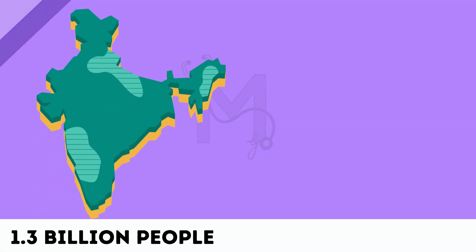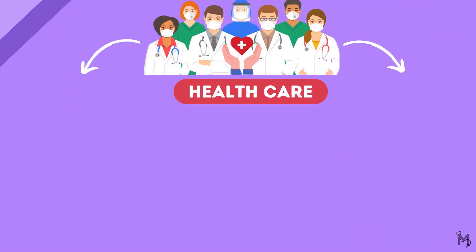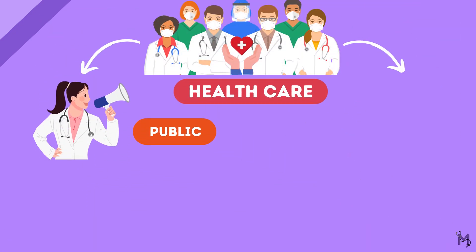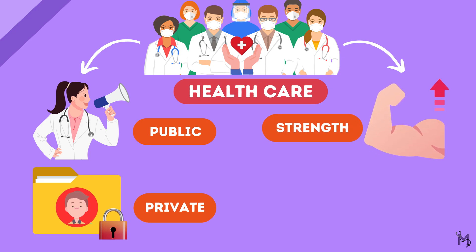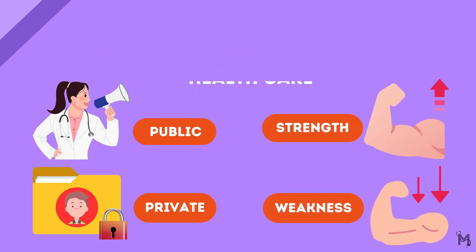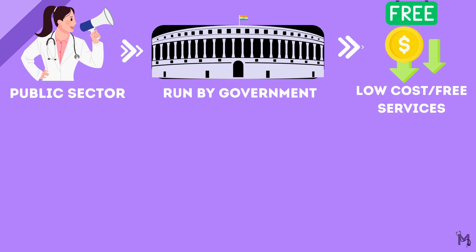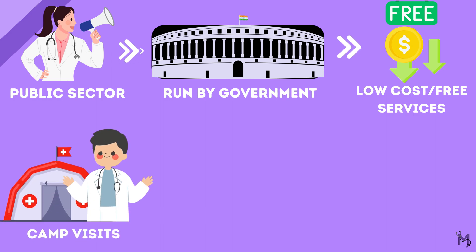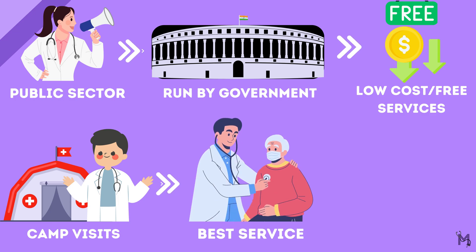India is a country of over 1.3 billion people with a vast and diverse healthcare system. Healthcare is delivered in India at the public and the private level. As with everything, it comes with its strengths and weaknesses. The public sector is run by the government and provides low cost or free healthcare services to the public. This can be related to the camps you visit where you treat patients to the best of your ability, free of charge.